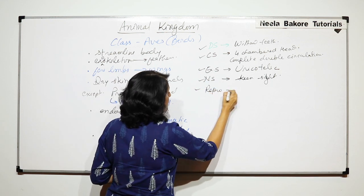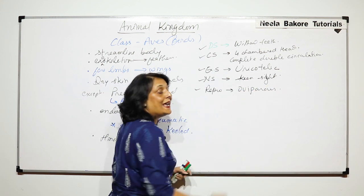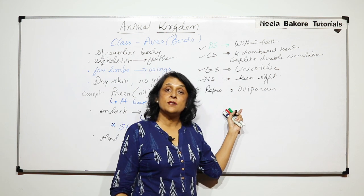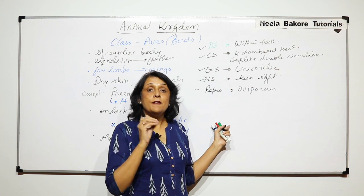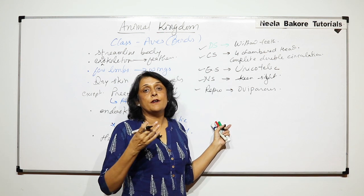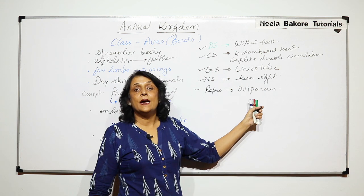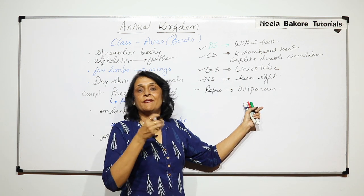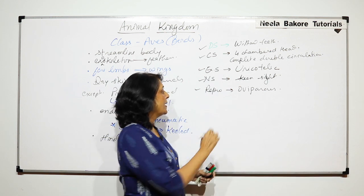Reproductive system. They are oviparous. They lay eggs. Again this comes under the adaptation. If they were viviparous then the female bird would have been required to carry the embryo along with it. But they are oviparous. So as soon as the egg is formed it is deposited with the shell and it is laid. They are oviparous.